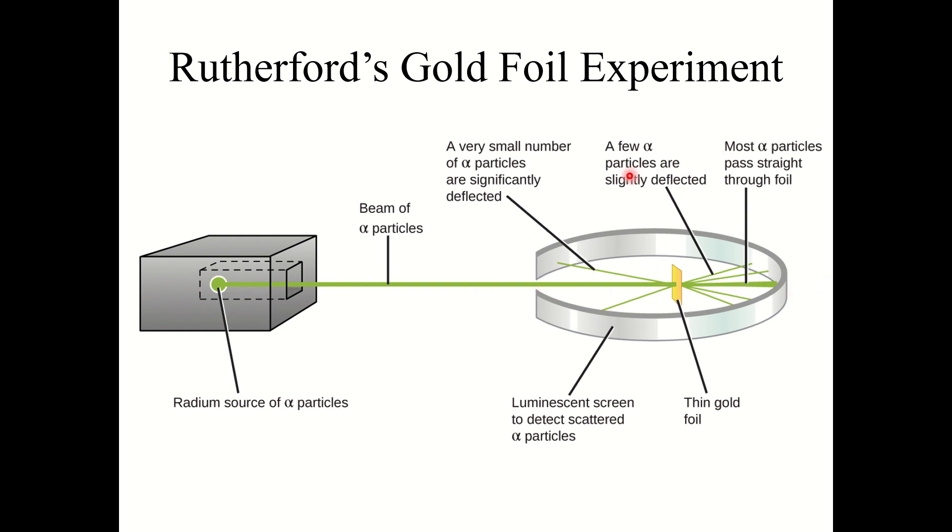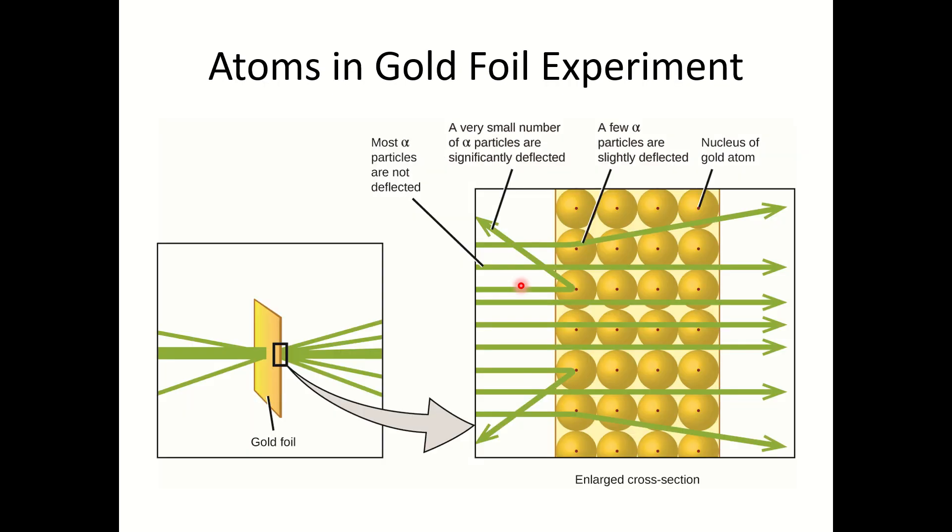A few of the particles were slightly deflected and a smaller number of particles were significantly deflected, almost bouncing straight back. So how do we explain this? Why do most of the particles go straight through? And now we arrive at the Rutherford model of an atom.